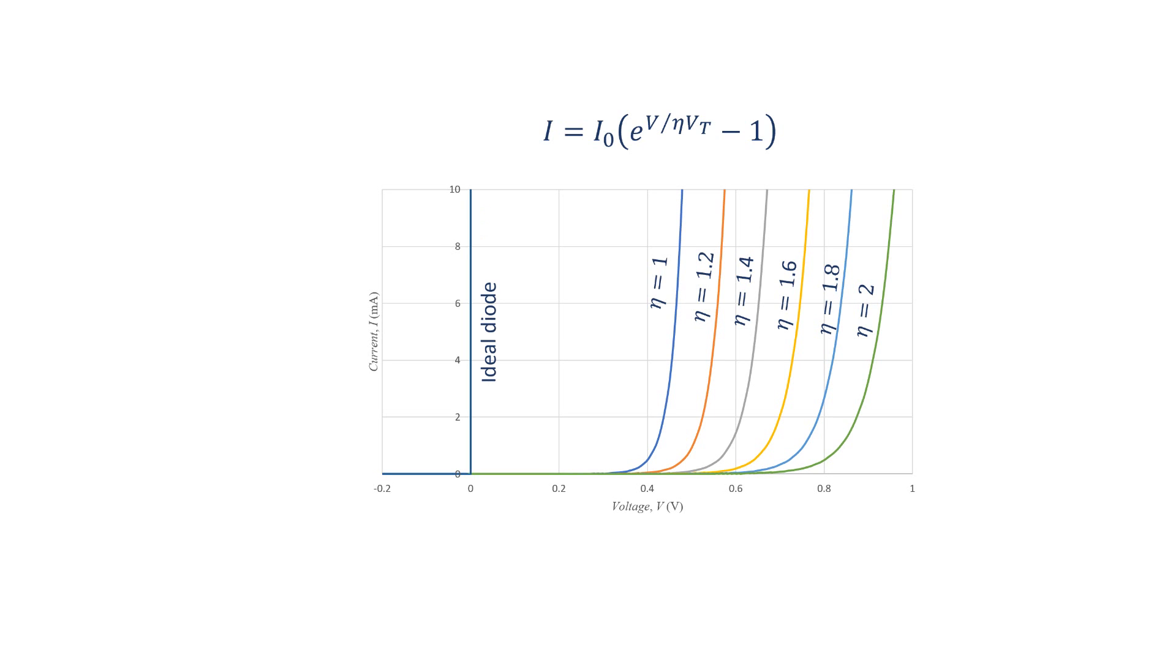In this figure, you can see the IV characteristics of the ideal diode. An ideal diode is short circuit at forward bias and is an open circuit in reverse. As you can see, the diode with ideality factor of 1 is very different to an ideal diode.